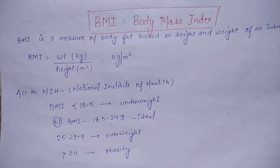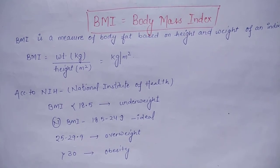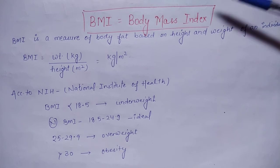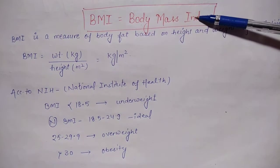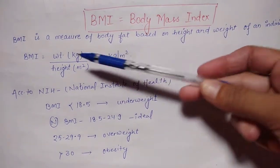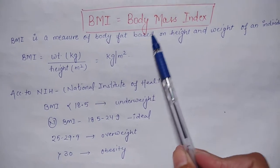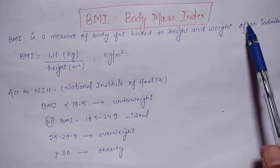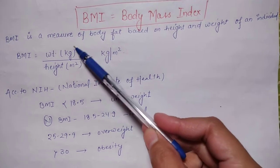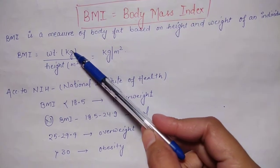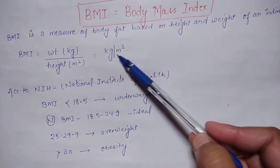Hello everyone, a warm welcome to my YouTube channel. Today we will discuss the formula for BMI, that is Body Mass Index. BMI is a measure of body fat that is based on height and weight of an individual. The formula is weight in kg divided by height in meters squared, and the unit of measurement is kilogram per meter square.